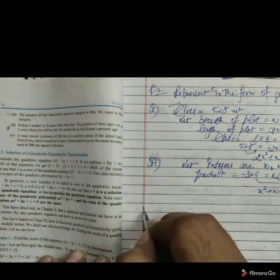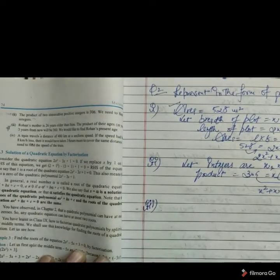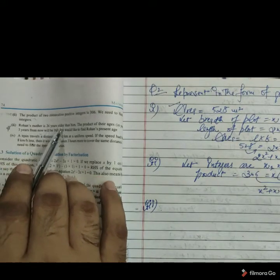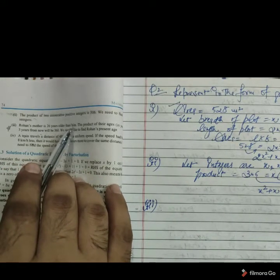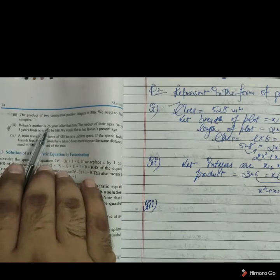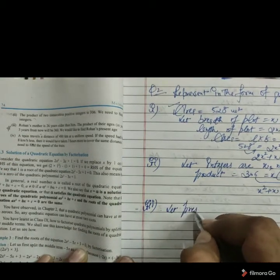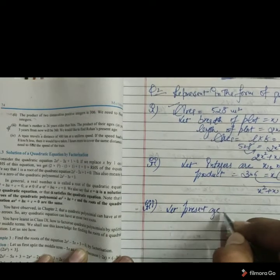Next part number 3 of question number 2 it is given. Rohan's mother is 26 years older than him. Means it is a comparison of Rohan with his mother. So what we have required here.